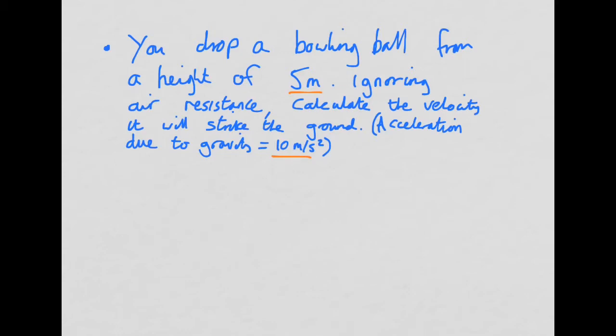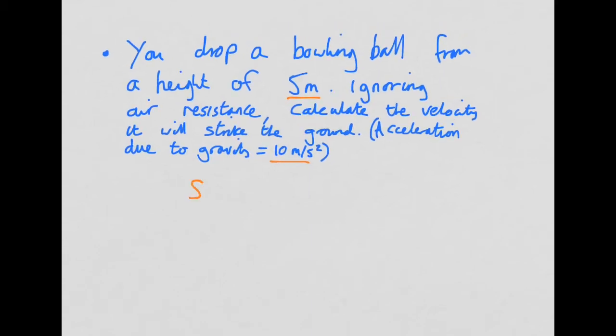So it's quite a good thing to list the things that we know. If we're dropping it from a height of 5 meters, we know that S is equal to 5 meters. We also know that acceleration, A, is equal to 10 meters per second squared. And we also know that because it's been dropped, its initial velocity is 0 meters per second. So U is equal to 0 meters per second. So let's write the equation out. V squared minus U squared equals 2AS.